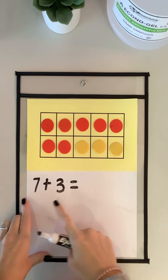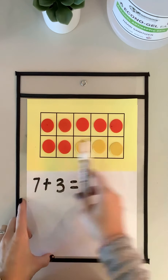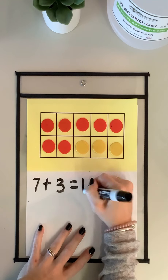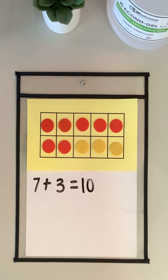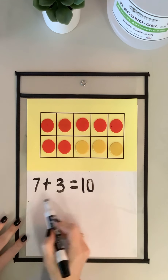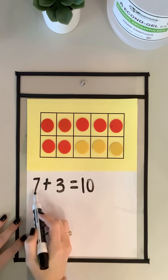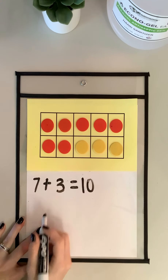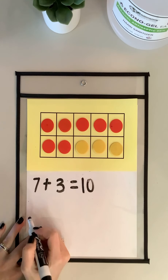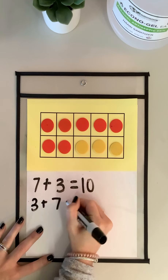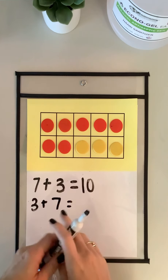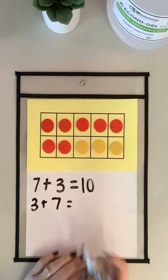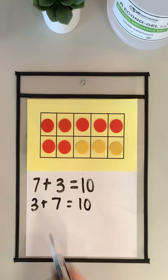Let's look at this problem: 7 plus 3. I have 7 red counters and 3 yellow counters, and I know that by looking at this representation that 7 plus 3 equals 10. For fact families it's always going to be the same three numbers — I'm just rearranging my two numbers to equal the same number. So instead of 7 plus 3 equals 10, I'm gonna switch it and do 3 plus 7, and I still see that it equals 10.